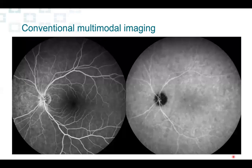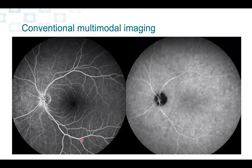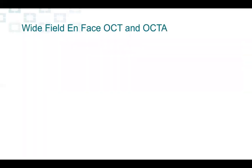We go for fluorescein and ICG, which is not telling us a lot. ICG is showing no involvement of the choroid, and fluorescein is showing mild staining of these areas but not picking up all these small satellite lesions. Our question is: do we have other non-invasive ways to prove where the lesions are located — at which level of the retina — and to prove there's no choroidal involvement? Yes, we do.